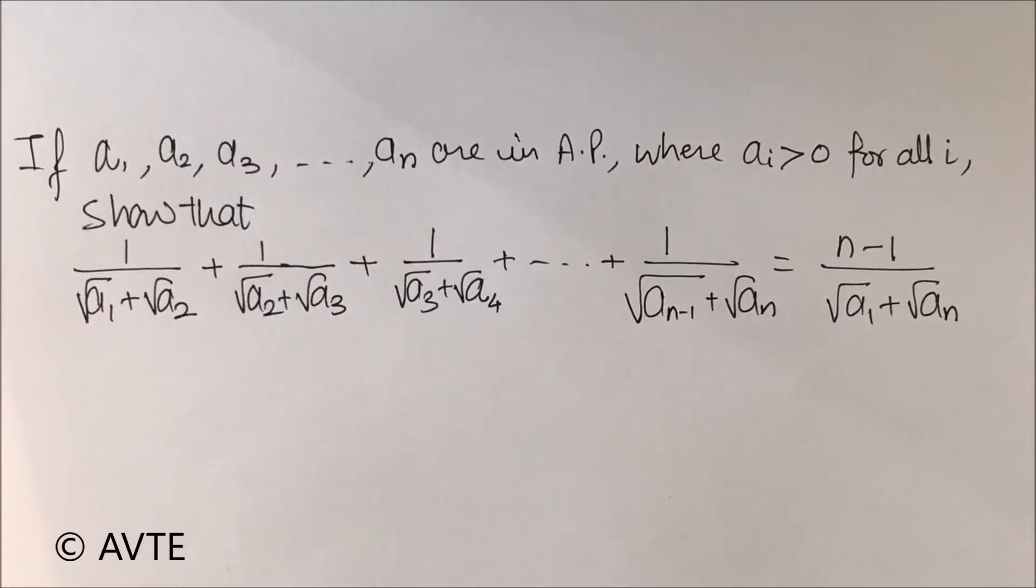If a₁, a₂, a₃ up to aₙ are in arithmetic progression where aᵢ is greater than zero, that is, terms are greater than zero for all the values of i, then show that: